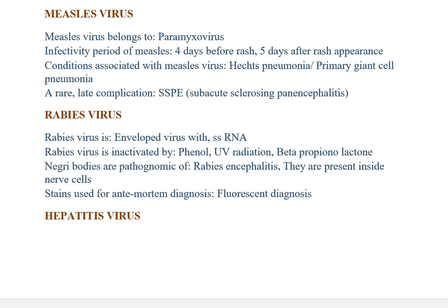Rabies virus is an enveloped virus with single-stranded RNA. Rabies virus is inactivated by phenol, UV radiation, and beta-propiolactone. Negri bodies are pathognomonic of rabies encephalitis; they are present inside the nerve cells. Stain used for ante-mortem diagnosis is fluorescent stain.